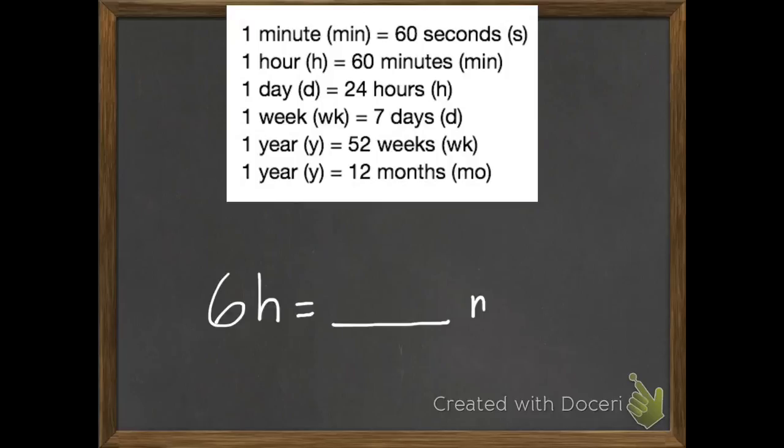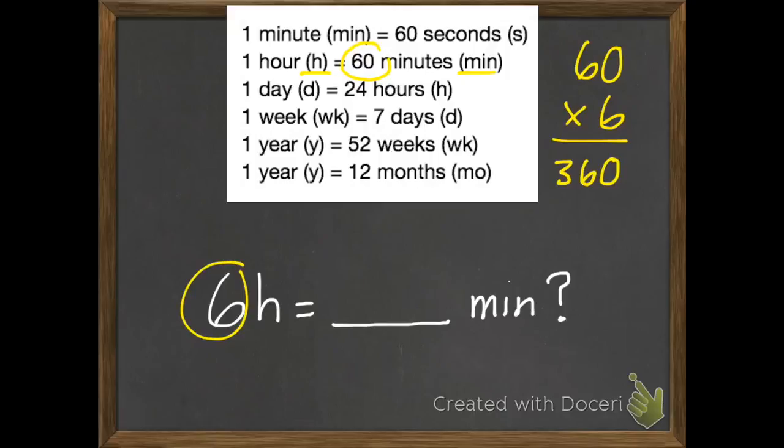Our first example question says if we have 6 hours, how many minutes do we have? First of all we need to figure out which of these facts will help us. The second one says 1 hour equals 60 minutes. So we have 60 minutes and we have 6 hours. So we're going to multiply 60 times 6, which is 360. So 6 hours equals 360 minutes.